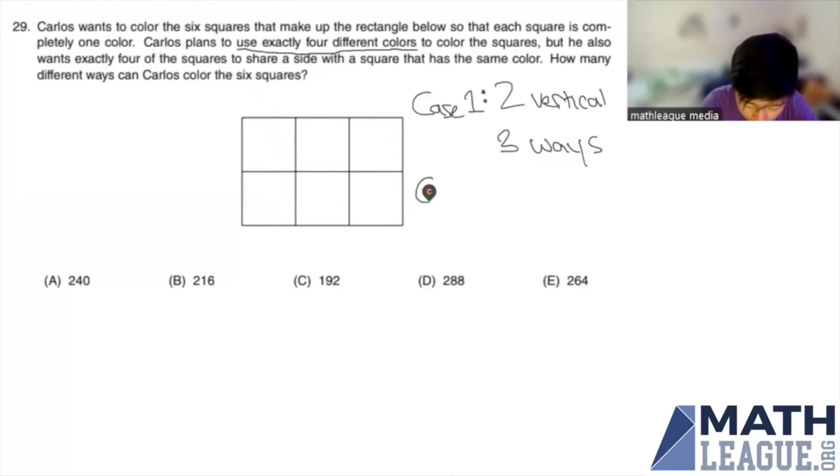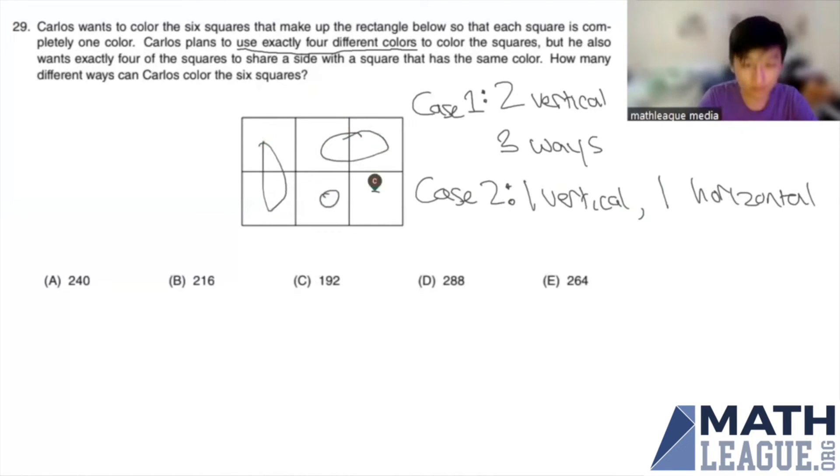And then we have case two, which is one vertical and then we have one horizontal as well. What this case might look like is something like this. Notice that our vertical one can only be on the very left or the very right, because if it was in the middle we would have no way to fit the horizontal one. So we have two choices for our vertical one. But after we put the vertical one, notice that we also have two choices for the horizontal one. We can either put it on the top or on the bottom. So therefore this case will have four ways to assign the groups.